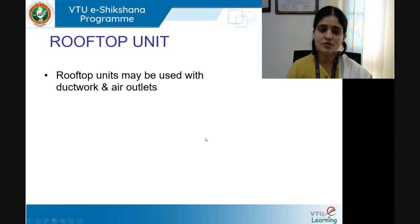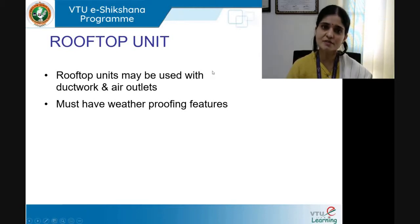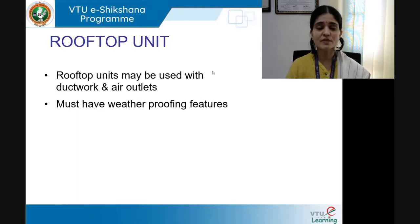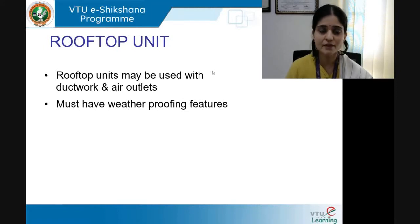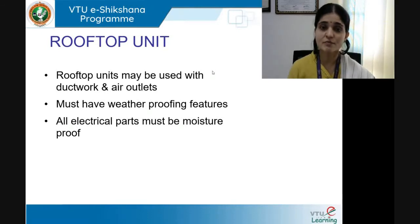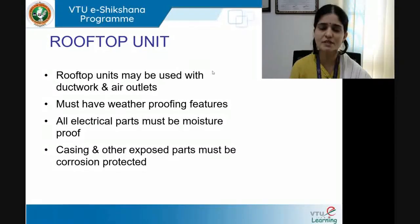Rooftop units may be used with ductwork and air outlets to transport air from one point to another. Since the equipment is placed on the rooftop and exposed to the elements, they must have weatherproofing features — protection from rain, harsh sun, wind, thunder, and lightning. All electrical parts must be moisture-proof to avoid mishaps, and the casing and other exposed parts must be corrosion-protected due to outdoor rain and humidity exposure.